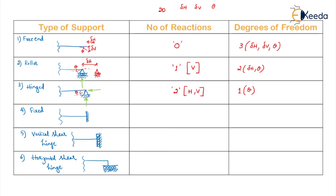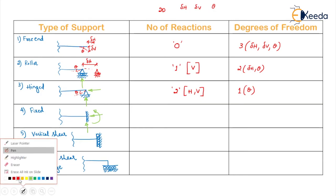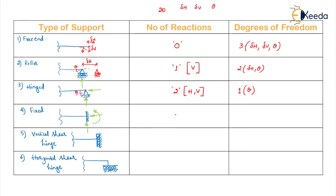A fixed support has restrictions in all three directions — two translations and one rotation. So the number of reactions is three (H, V, and M — moment), and the number of degrees of freedom is zero.